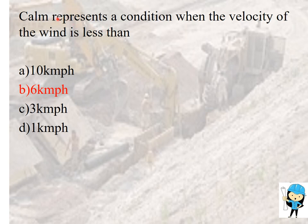Calm period: calm represents a condition when the velocity of the wind is less than 6 kilometers per hour, or less than 1.5 meters per second. The calm period has no significance and is represented as a central circle.